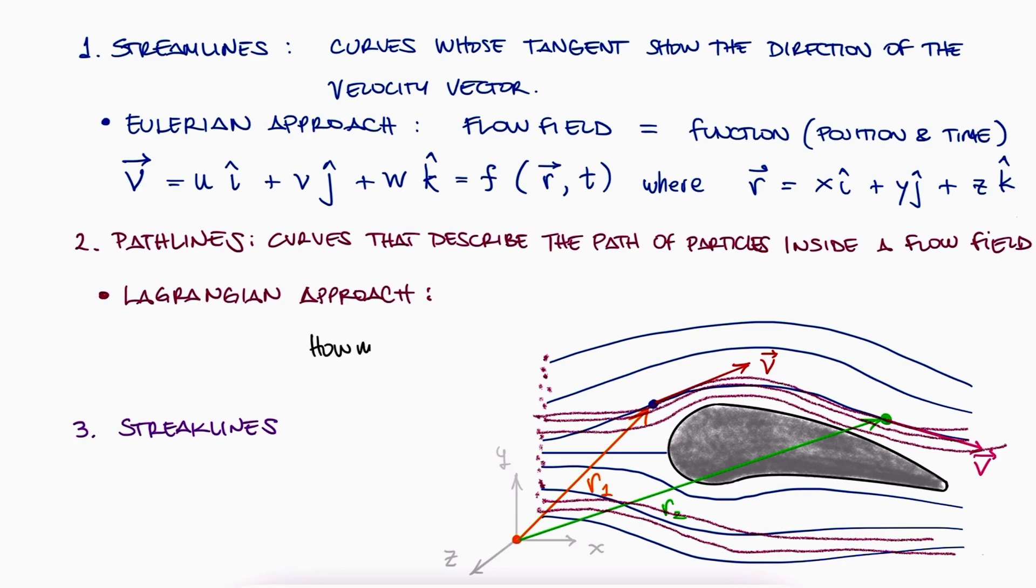Now, how many particles would we need to fully describe the flow field using this approach? It would be a really high number, right? Therefore, for a fluid flow, it's usually easier to use the Eulerian approach.